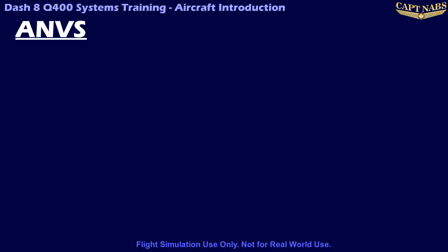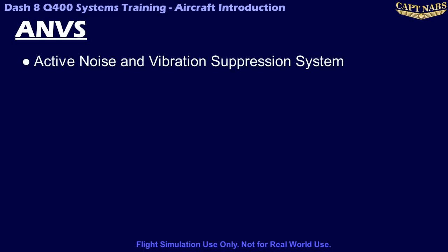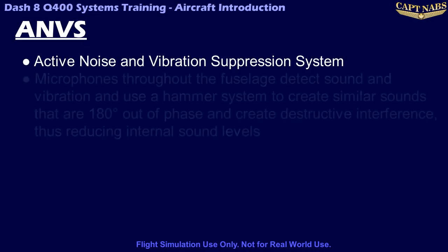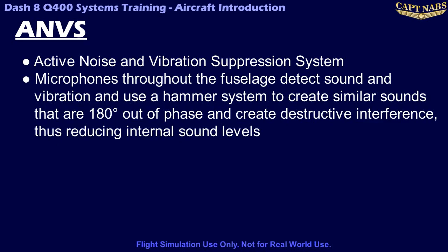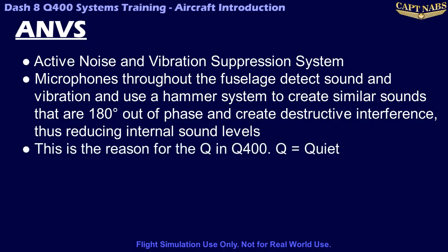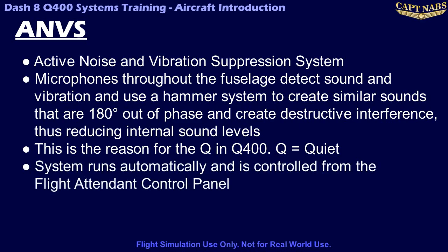One of the key features of the Q400 is the ANVS, or Active Noise and Vibration Suppression System. This system uses a series of microphones throughout the cabin to detect engine noise and vibration. A series of hammers located under the floor create similar sounds that are 180 degrees out of phase, causing destructive interference with the engine noise, thus reducing noise levels within the cabin. This system is the reason for the Q in Q400 — Q stands for quiet. The system runs automatically though it can be controlled from the flight attendant control panel. In reality, this system wears out very easily, and in some aircraft it is very effective; in others, not so much.